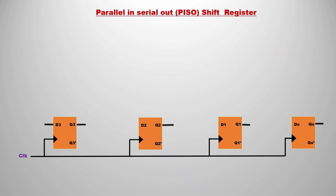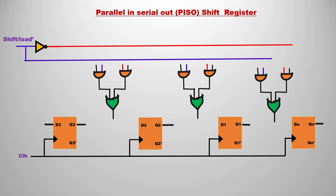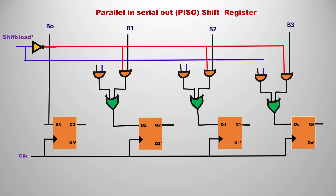To construct the PISO shift register I need four D flip-flops, all synchronized with the clock. I will also take an enable signal called shift/load-bar, where shift is active high and load is active low. This enable decides whether we are performing loading or shifting. The combination used is a multiplexer — specifically a 2-to-1 multiplexer — built from two AND gates connected with an OR gate.